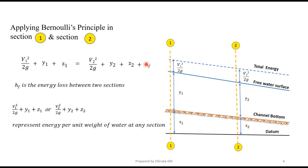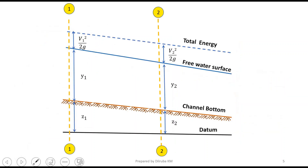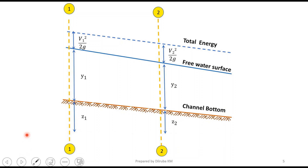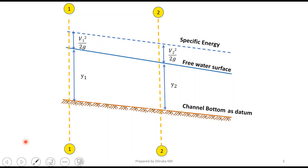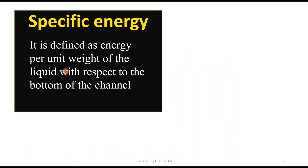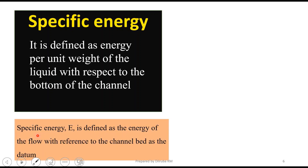The term v1²/2g + y1 + z1 and v2²/2g + y2 + z2 represent the energy per unit weight of water. Now, instead of an arbitrary datum, I am taking the channel bottom as datum, dropping the z term. When the channel bottom is taken as datum, the total energy is termed as specific energy. Specific energy is the energy per unit weight of the flow with respect to the channel bottom, or the energy of flow with reference to the channel bed.